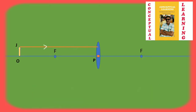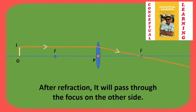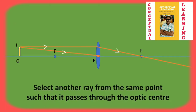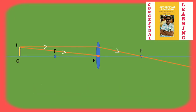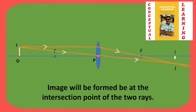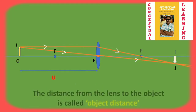Now let us consider a ray which is parallel to the principal axis. After refraction, it passes through the principal focus. We take another ray which is passing through the optical centre — it is undeviated — and the two refracted rays intersect at J, which forms IJ as the image of object OJ.